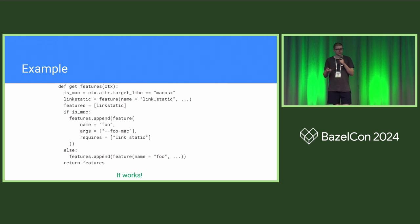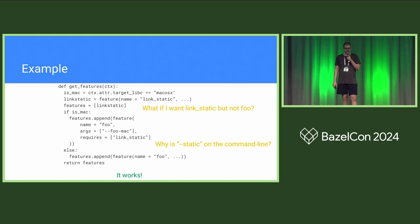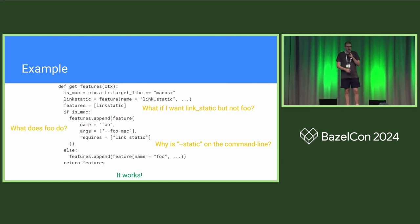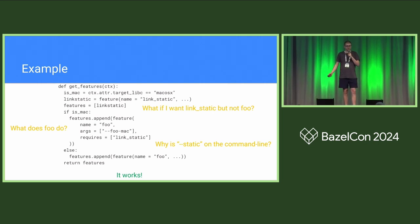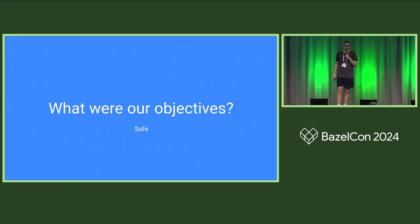This is what we're trying to solve — and a few other things while we're at it. If a user wants to know why --static is on the command line, it should be easy to work out. If the toolchain author wants to add link_static but not foo to their features, that should be easy. If a regular person wants to know what foo does, that should be easy. So we came in with a few objectives: we wanted to make a toolchain that was safe, simple, and modular.